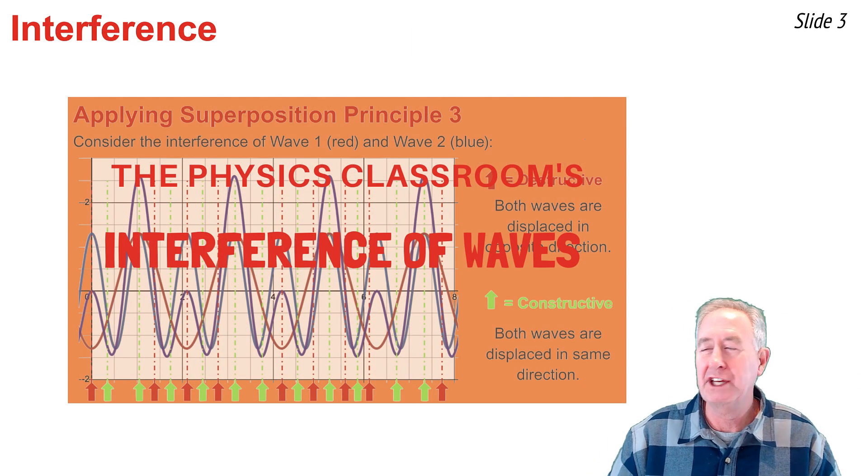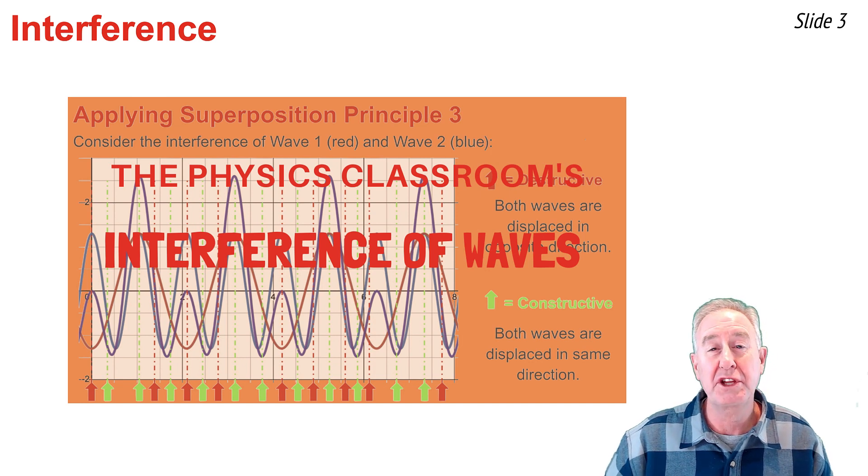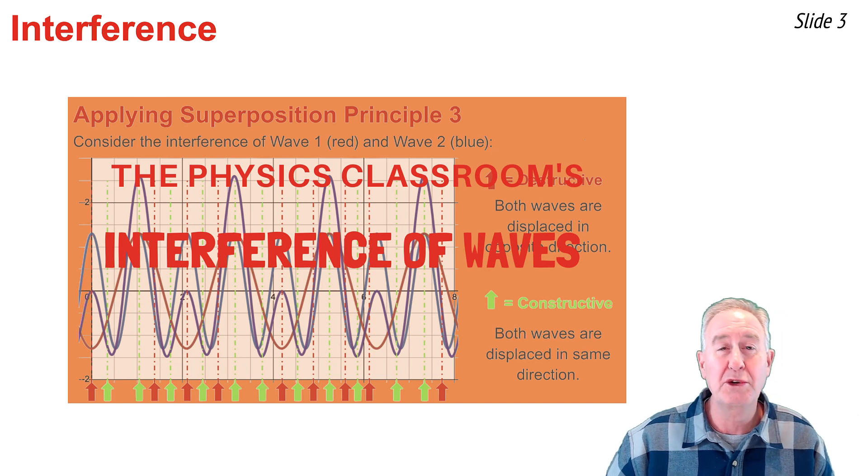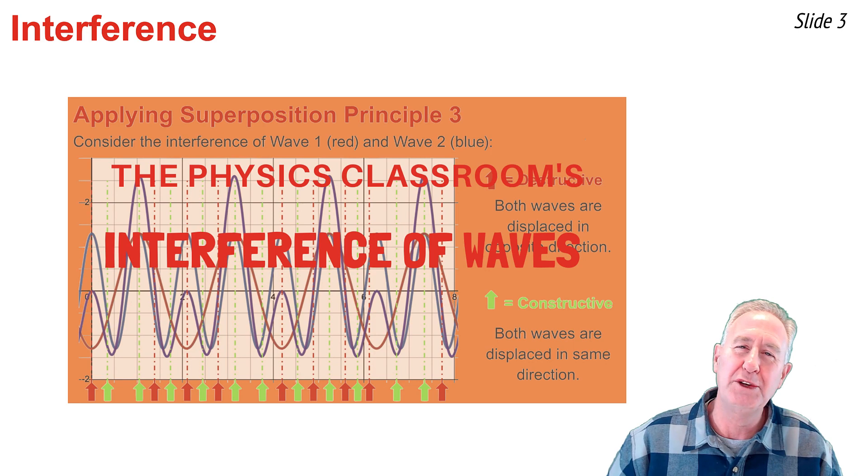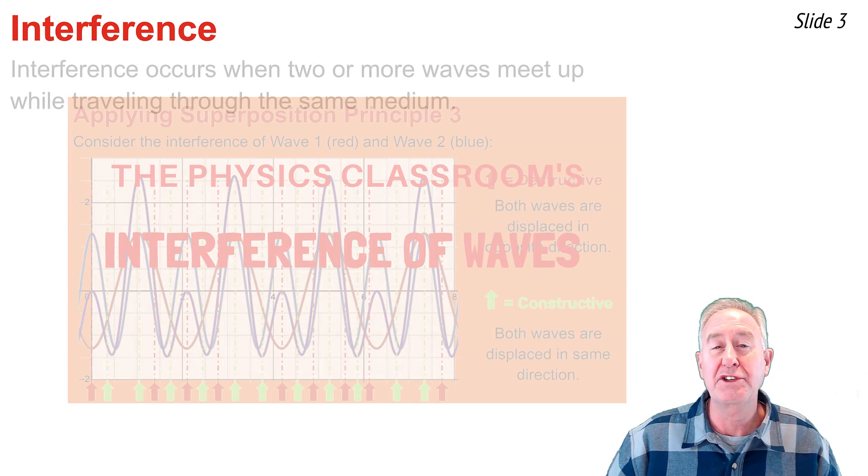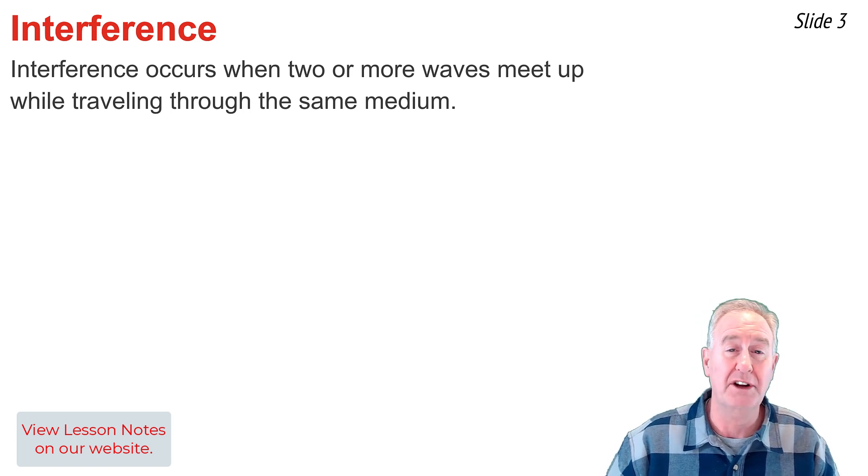In a previous video, I discussed the interference of waves, and understanding of wave interference will be essential in understanding the topic of this video. So I've left a link to this video in the description section if you need to review it. Interference occurs whenever two waves meet up while traveling through the same medium. There are two types of interference: constructive and destructive interference.